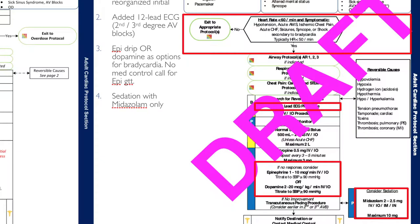We've added a 12-lead EKG for second degree and third degree AV blocks. Big change here: it's going to be an epi drip or dopamine as options for bradycardia, with no med control call required for the epi drip. Sedation is going to be with midazolam only.